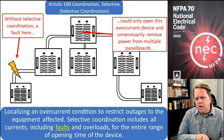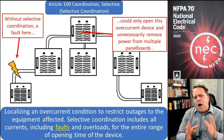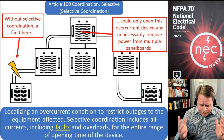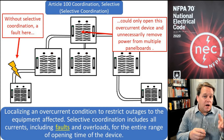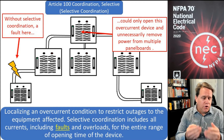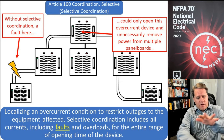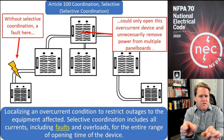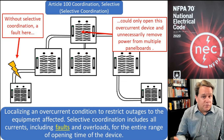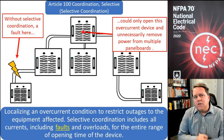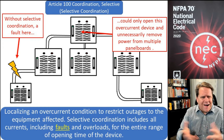When talking about selectively coordinated systems, how do we make sure the system will coordinate? It's a fairly lengthy process requiring the time-current characteristic curves of your overcurrent devices — your circuit breakers or fuses. You get transparencies of them and lay them on top of each other to see if they overlap at the given available fault current. There's also software that can help, and a coordination study is usually a very involved process.